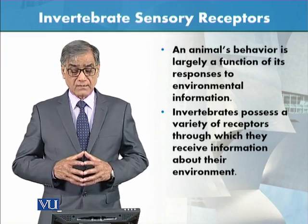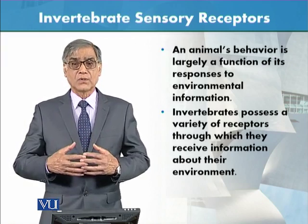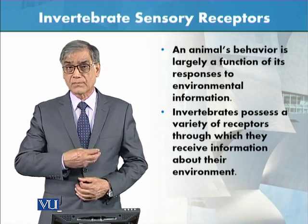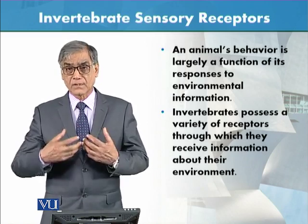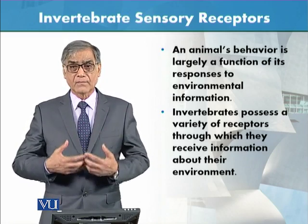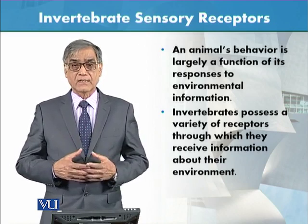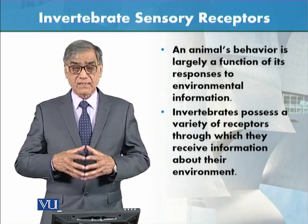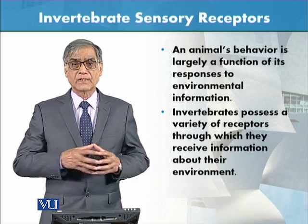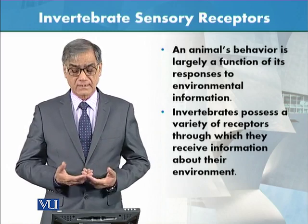یہ sensory receptors ہی ہیں جو stimulus receive کرتے ہیں، اور وہ information brain کی طرف جاتی ہے، اور brain سے پھر information muscles یا glands کی طرف آتی ہے، اور پھر animal behave کرتا ہے۔ یہ animal کا behavior اصل میں sensory receptors کی بیس پہ ہے — اگر sensory receptors میں problem ہے تو animal کا behavior بدل جائے گا۔